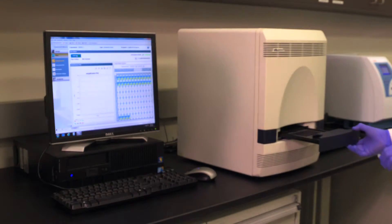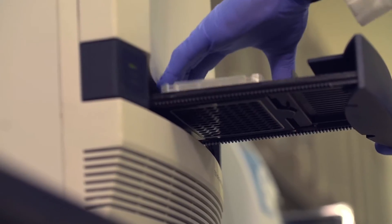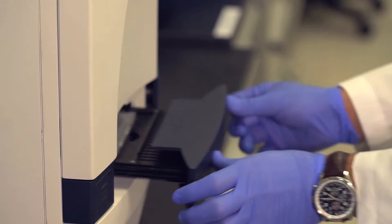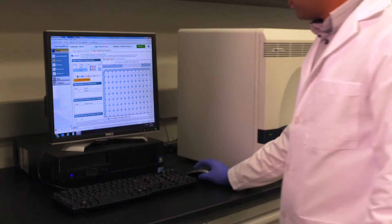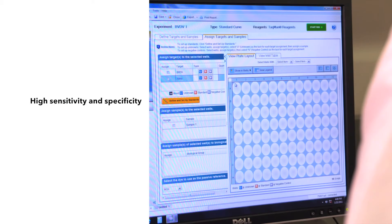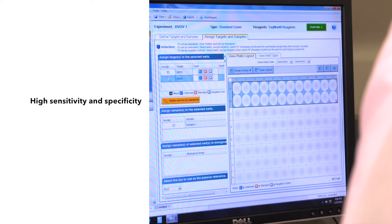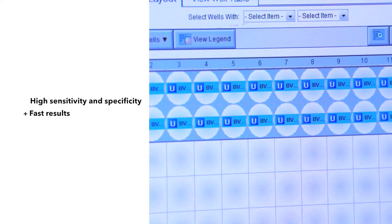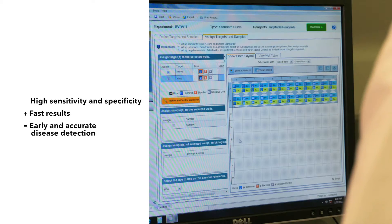Real-time PCR enables accurate and reliable testing to detect unique genetic sequences of infectious organisms. This diagnostic tool offers high sensitivity and specificity, and fast results needed for early and accurate detection of harmful diseases in farm animals.